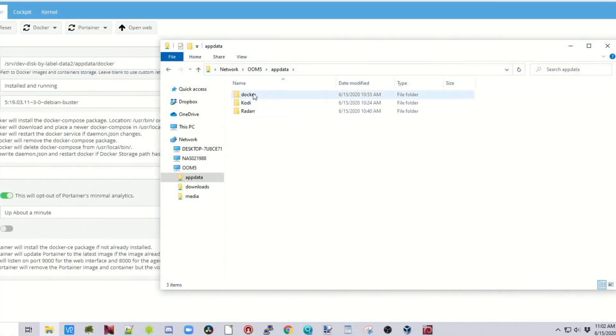And click on AppData. And here we can see we have a Docker folder now, which we just added. And there's the Kodi and Radar folders before. Double-click on the Docker folder.